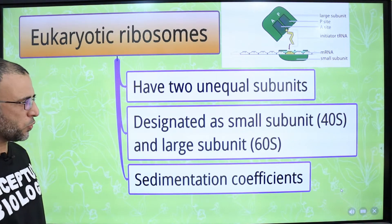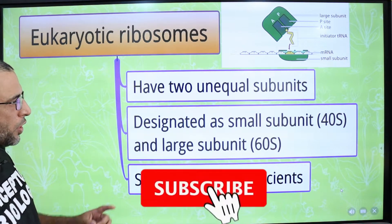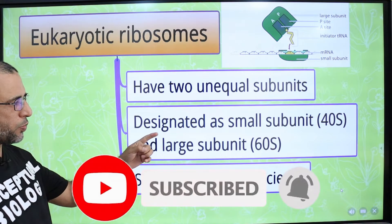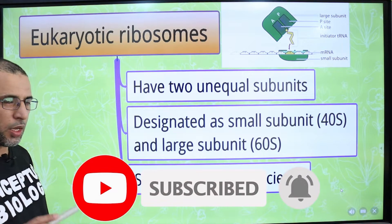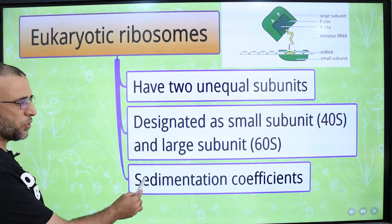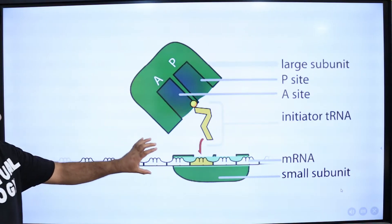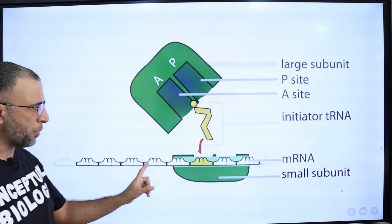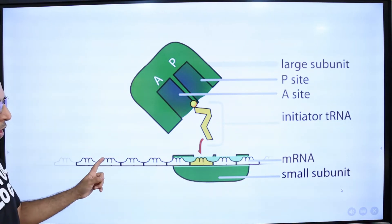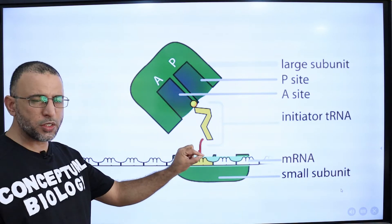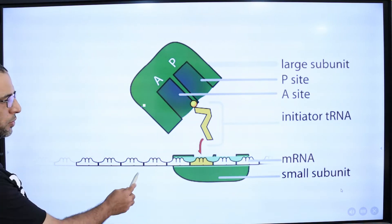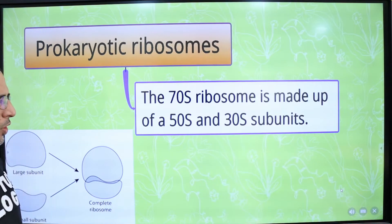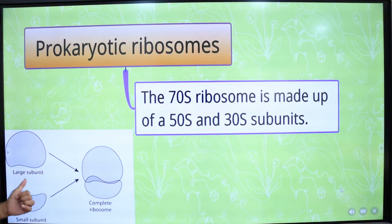A ribosome consists of two subunits: the small subunit, which is 40S, and the large subunit, which is 60S. S is the sedimentation coefficient. The small subunit binds with mRNA during protein synthesis. The prokaryotic ribosome, which is 70S, is made up of a small subunit of 30S and a large subunit of 50S.